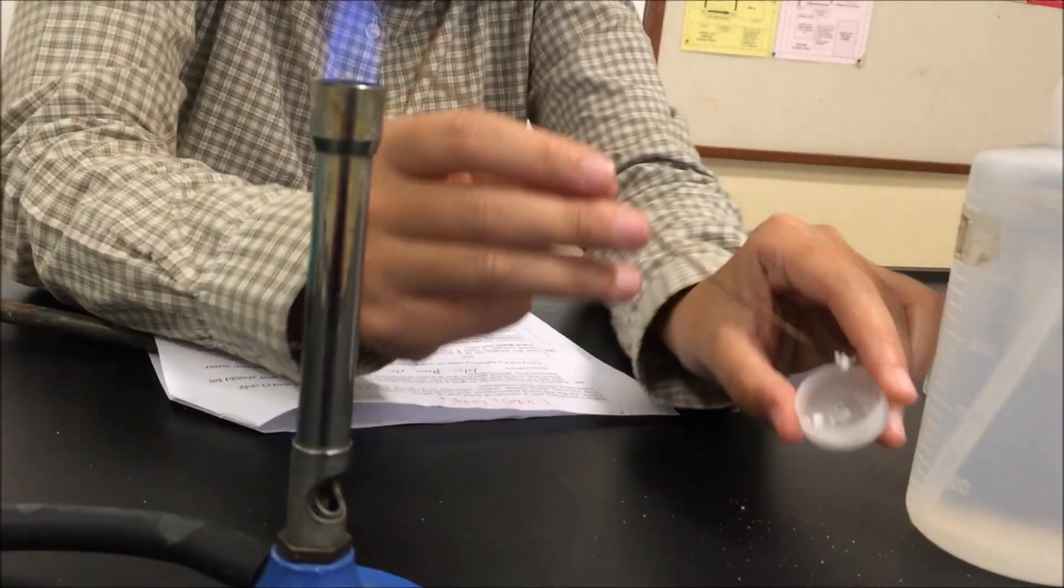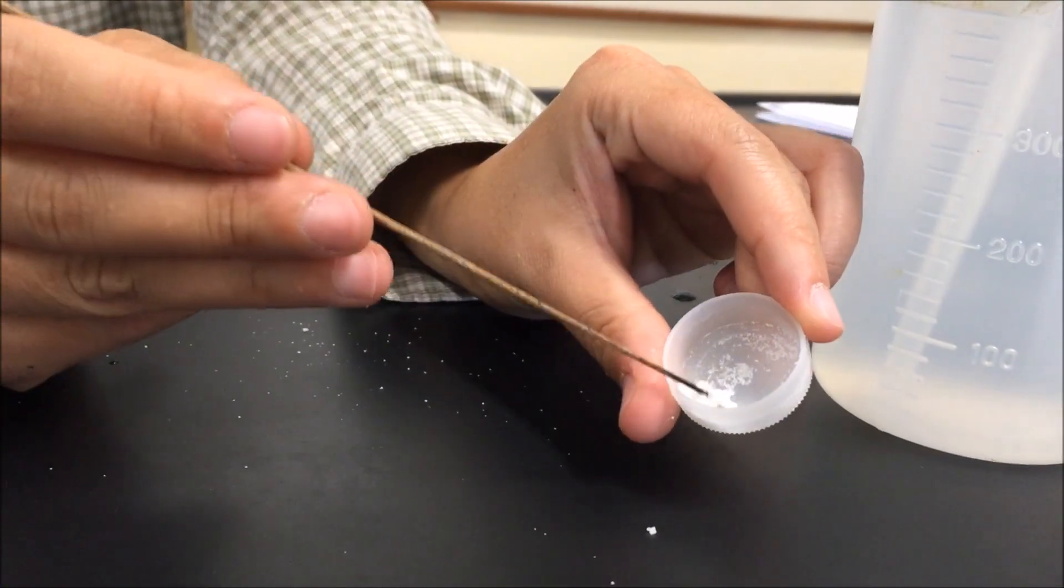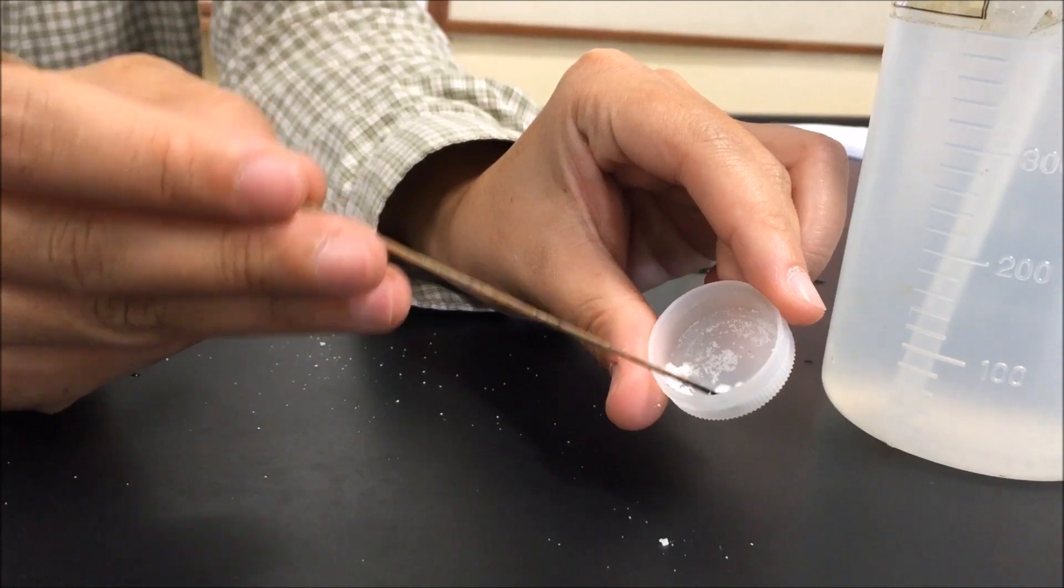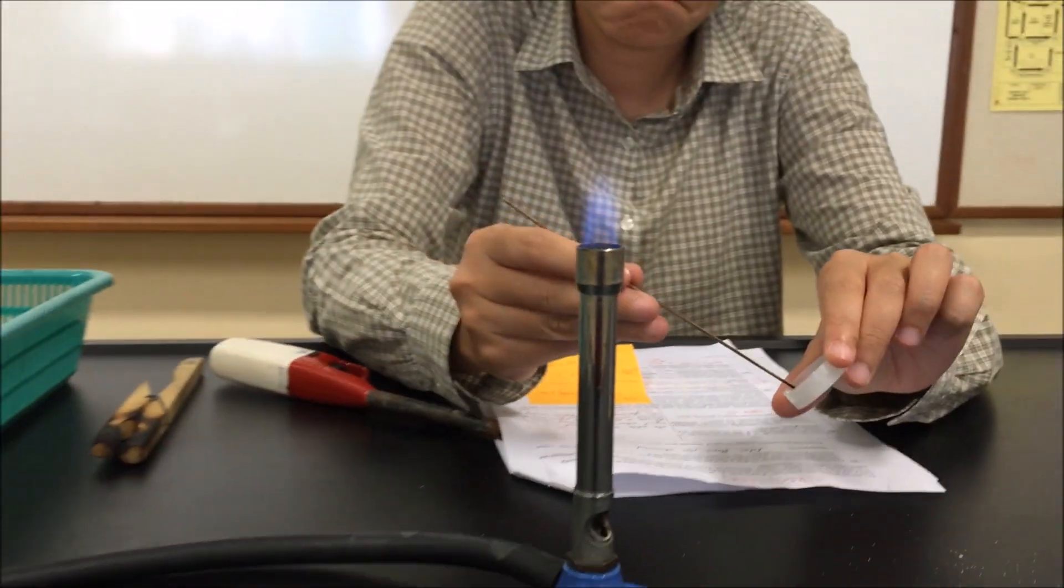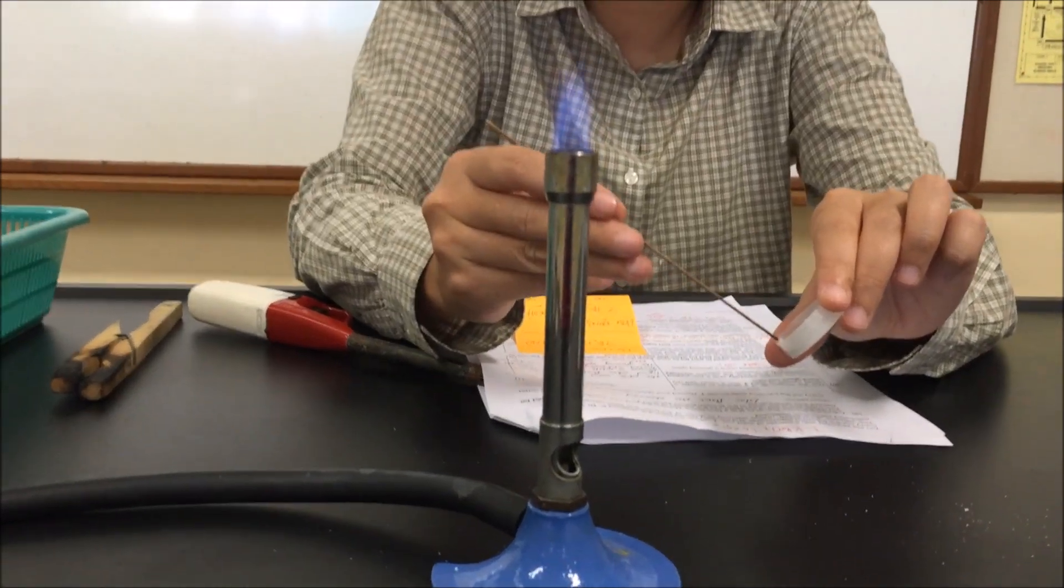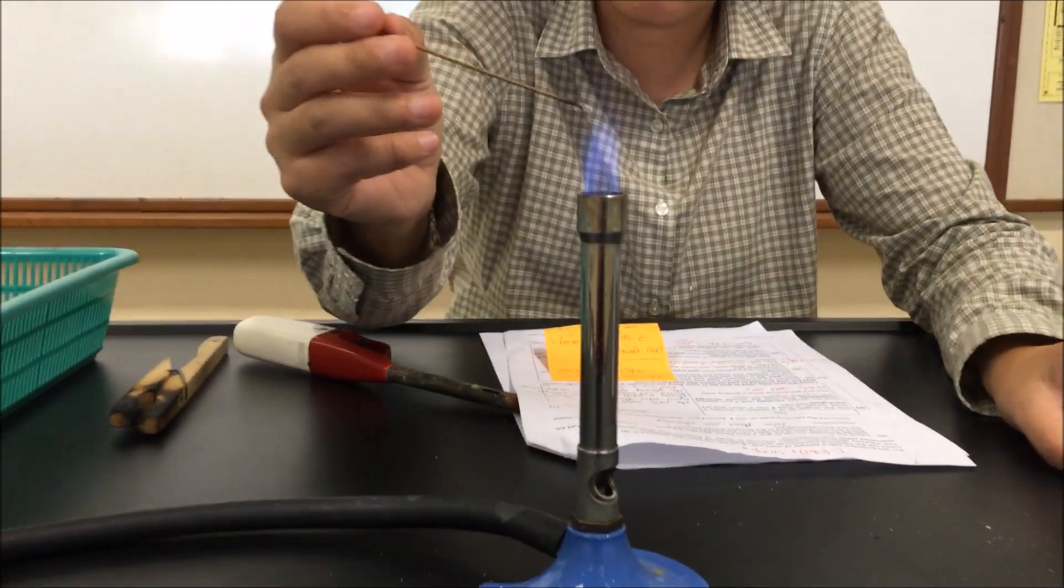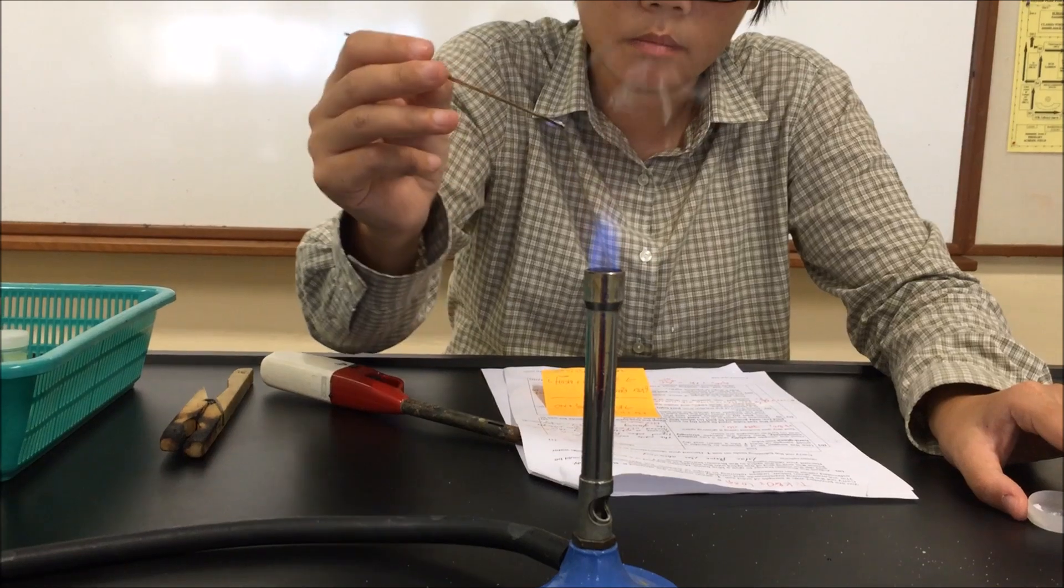If you wish to, you could repeat the flame test. Just coat again. Do not leave the splint in the fire for too long. Just put it in the fire at the tip of the small blue triangle. The first color you see is the color that you want.